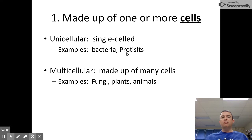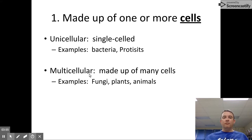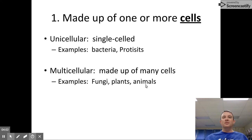Every living organism on planet Earth is either unicellular or multicellular. Bacteria and protists are organisms where the entire organism is one cell. Multicellular, of course, means made up of many cells — and that includes us. You have something on the order of 30 trillion cells in your body. Animals, plants, and fungi — at least most fungi — are multicellular.